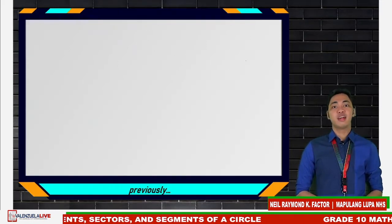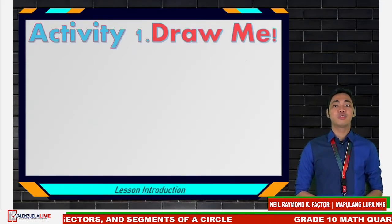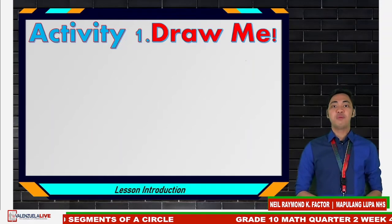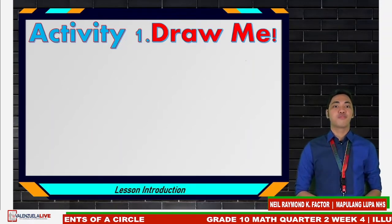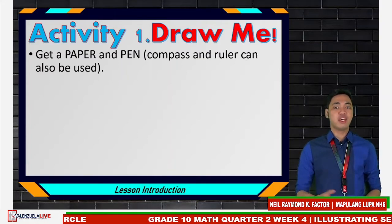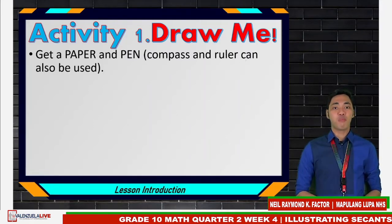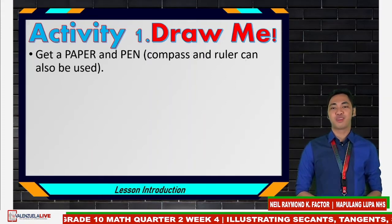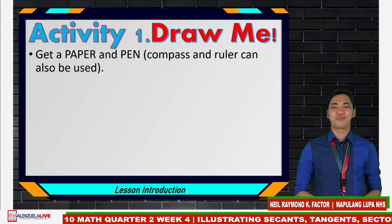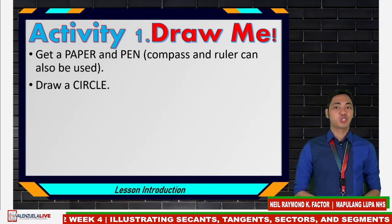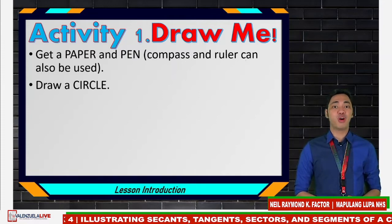But before that, let us have a short activity entitled Draw Me. Let us see if you can follow the given instructions and be able to draw the needed figure. For this part, you will be needing any paper and a pen. Compass and ruler can also be used for easier and more accurate construction. Are you ready? Let's begin. First, you need to draw a circle — make sure that it is big enough so that you can still draw lines inside.